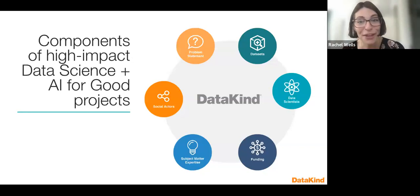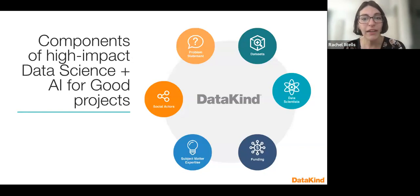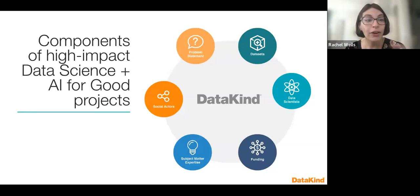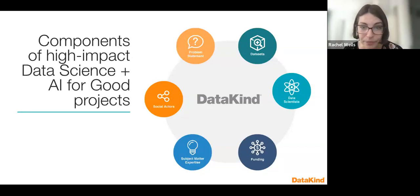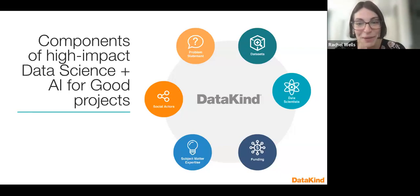At DataKind, we incorporate all of these practices into our work. These are our six core high-level components needed for high-impact data science projects, and about half of them are stakeholder-related. We partner with prospective partners and stakeholders who may not have data science knowledge but are social actors who know the ins and outs of the work on the ground, paired with subject matter experts and data scientists.